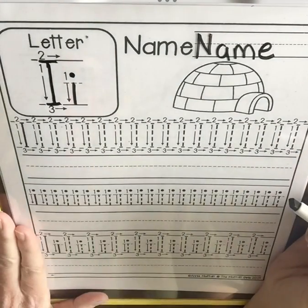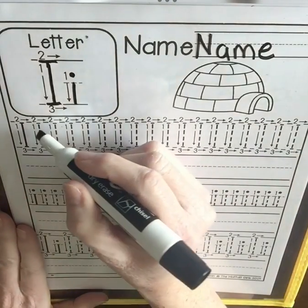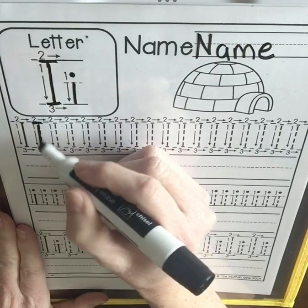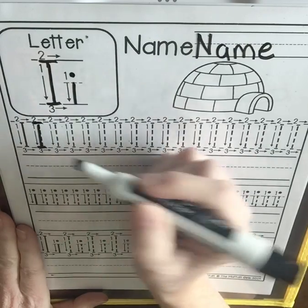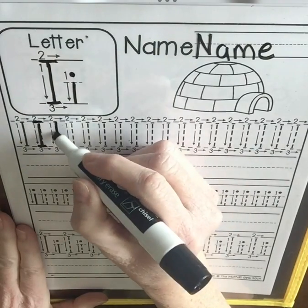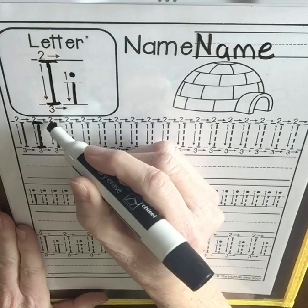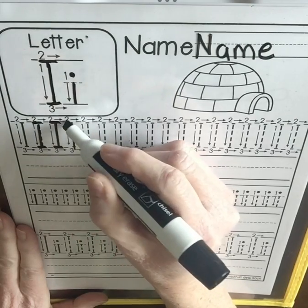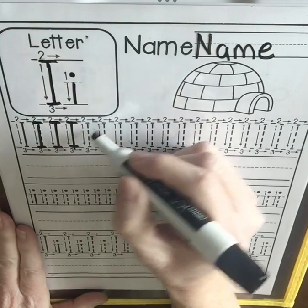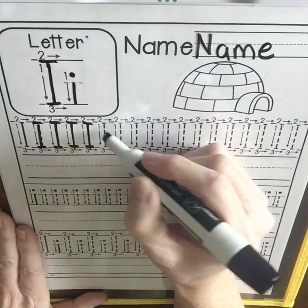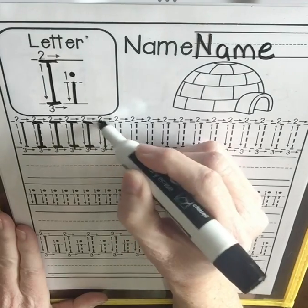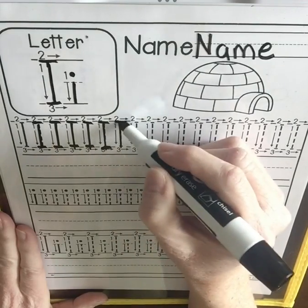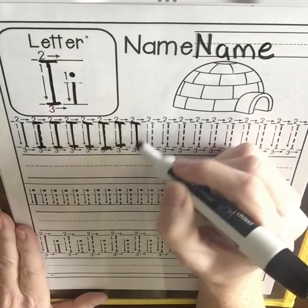Let's do our capital I's first. Big line down, back to the top, little line, little line. Big line down, back to the top, little line, little line — and you're going to do that on all of these capital I's.